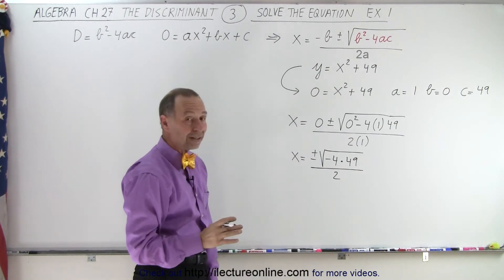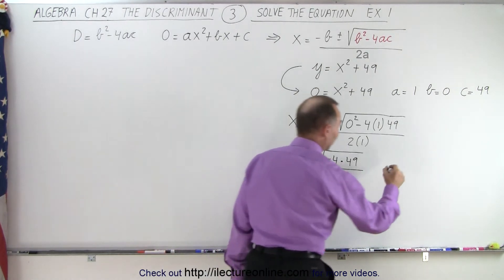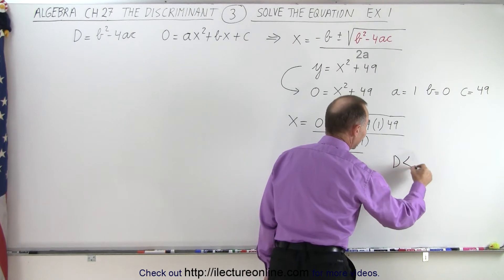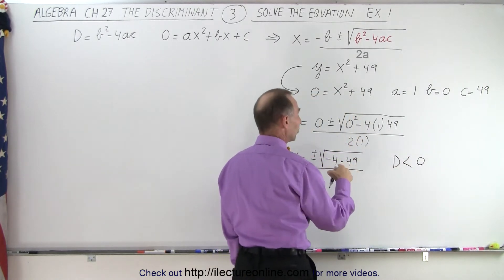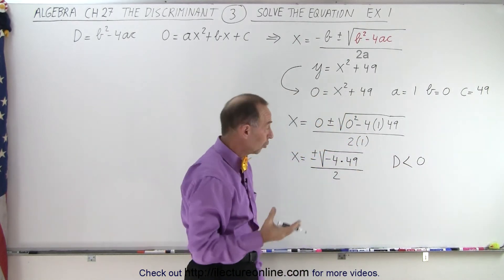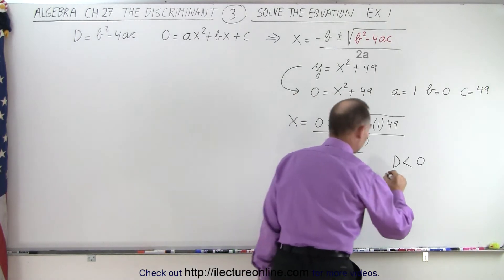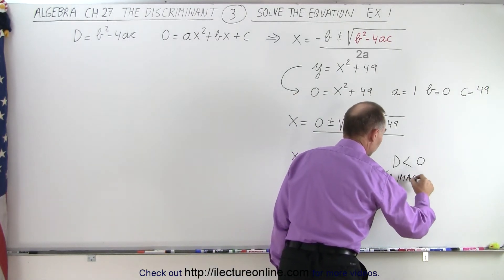What I can see here is that the discriminant is negative, D < 0. It's a negative number, which means there's no real solution. There will be two imaginary solutions.